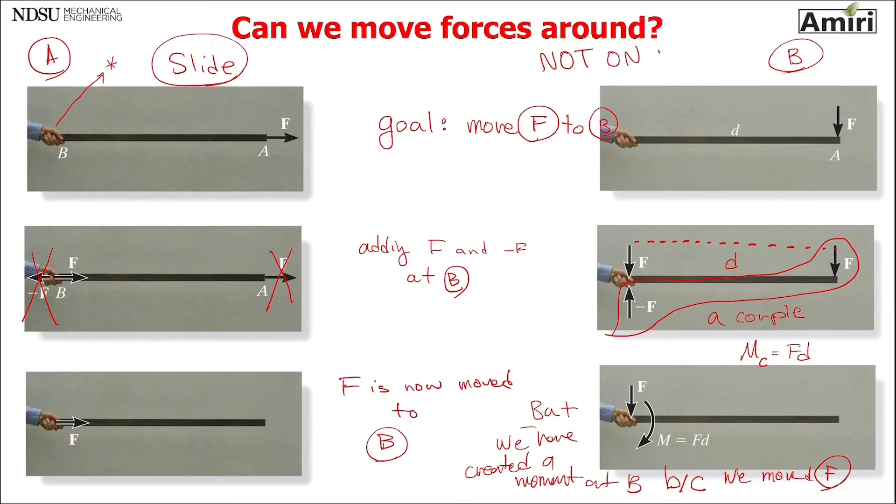You see here, this is line of action of F. And I just moved F on its line of action. I slide it and nothing happened. You can move it and put it anywhere. But here, this is line of action of F. And I didn't move it on its line of action. I put it somewhere else. And that's why it created that moment. So remember, any time that you move a force and it's not on its line of action, you're creating a couple moment.